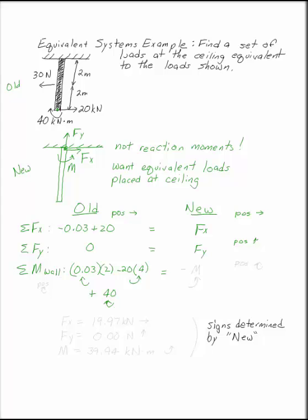In my new system at the wall, Fy and Fx go through the wall and do not contribute a moment at the wall. But I have my moment, which I've defined here as counterclockwise.